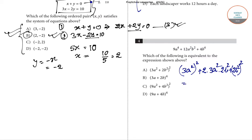This is in the form a² + 2ab + b², so we can write it as (3a² + 2b²)², which is option A. The answer for question number 4 is (3a² + 2b²)².